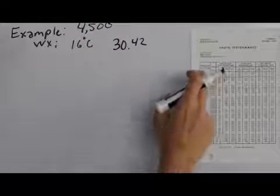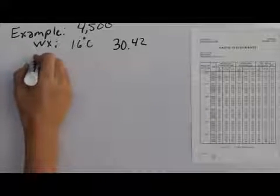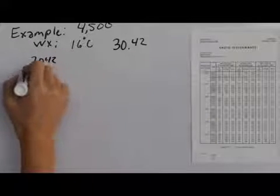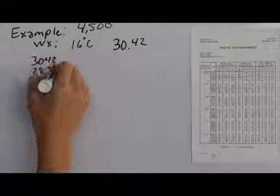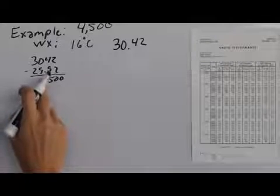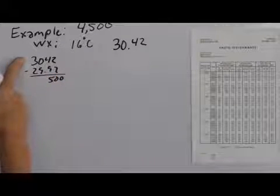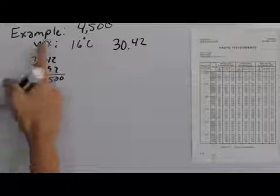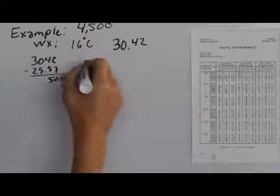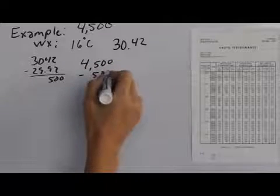The first thing we need to do is calculate our pressure altitude. With the pressure setting of 30.42 minus 29.92, we get a difference of 0.5, which is really 500 feet. And because the pressure is a high pressure, the air is thick, so for our cruise altitude we would have to take our 4,500 and subtract that 500 from it.